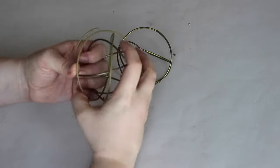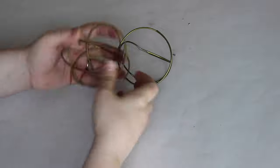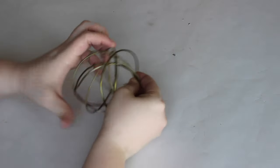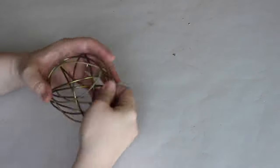Now you want to slide all three of those hanger pieces into one another until you're happy with the orb shape that you've created.